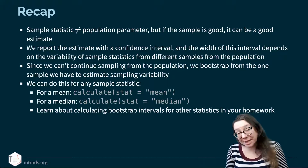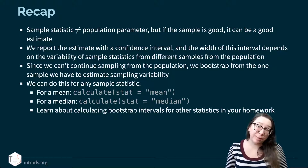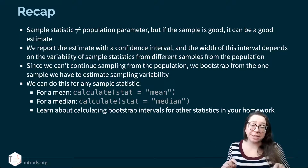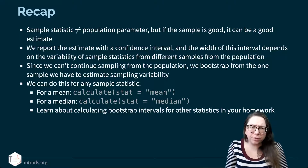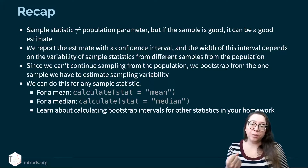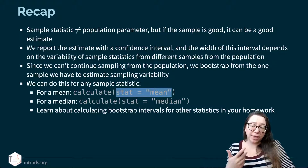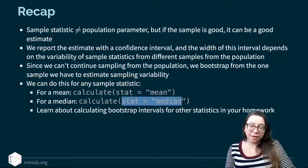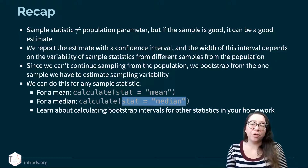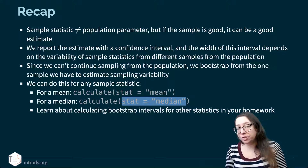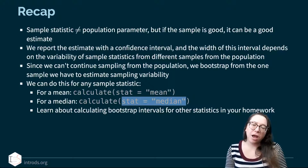To recap: your sample statistic from your observed sample is not your population parameter, but if your sample is good — meaning representative — it can be a good estimate. We report the estimate with a confidence interval, and the width depends on the variability of sample statistics from different samples. Since we can't keep sampling from the population, we bootstrap from the one sample we have to estimate the sampling variability. For the mean we use 'mean,' for the median we use 'median,' and there are other options available in the calculate function. We'll learn about calculating bootstrap intervals for other statistics in your last homework for the course.